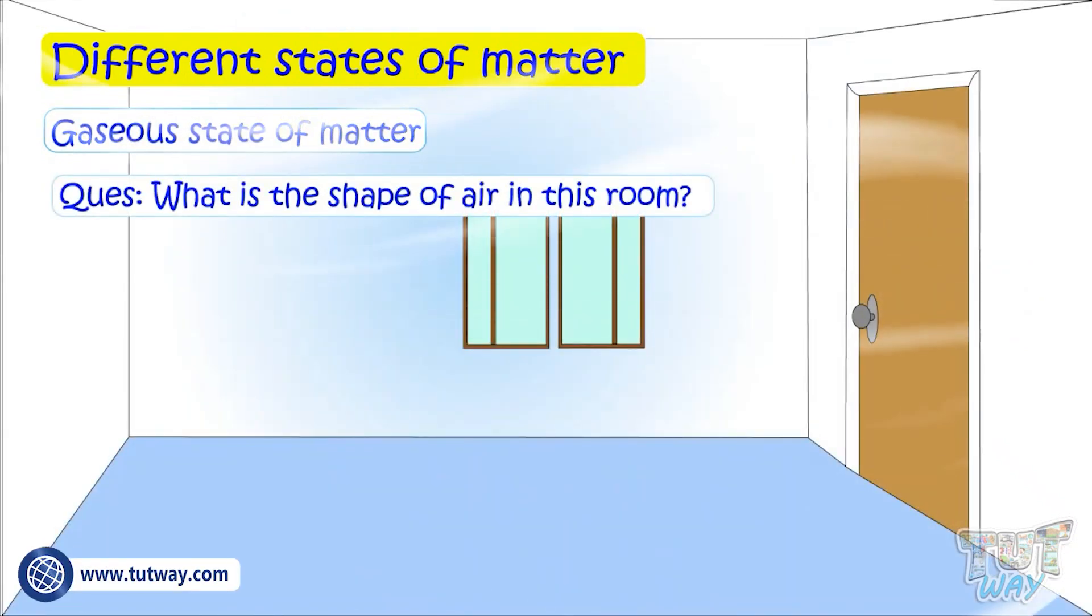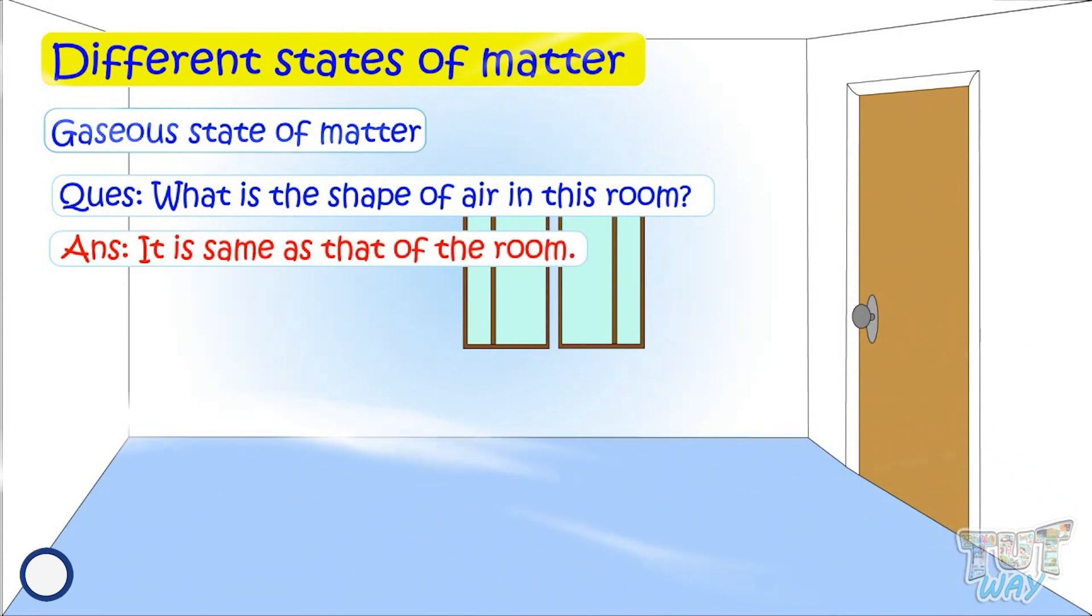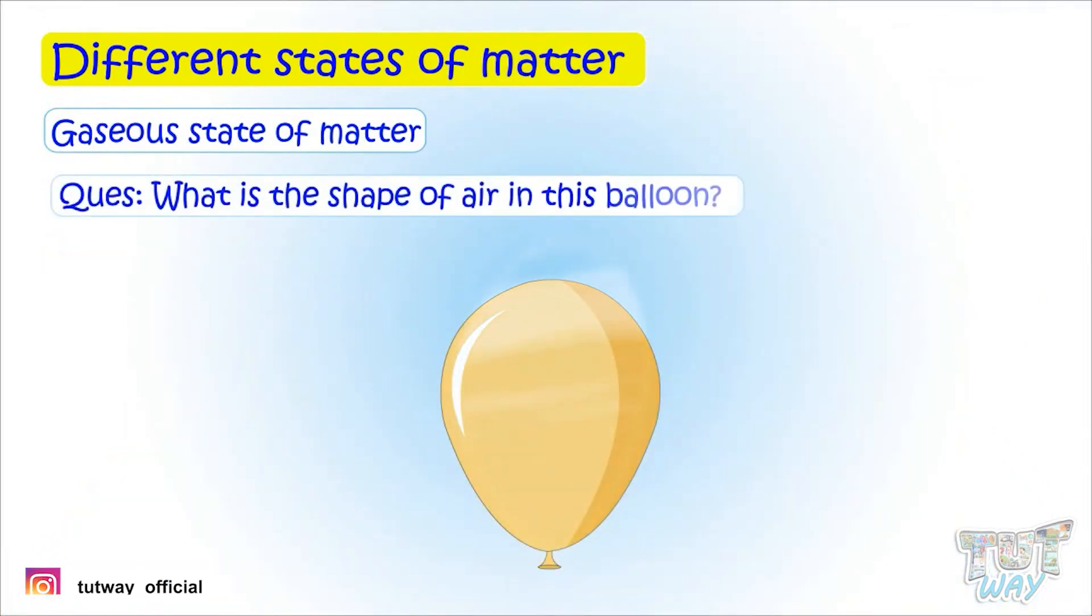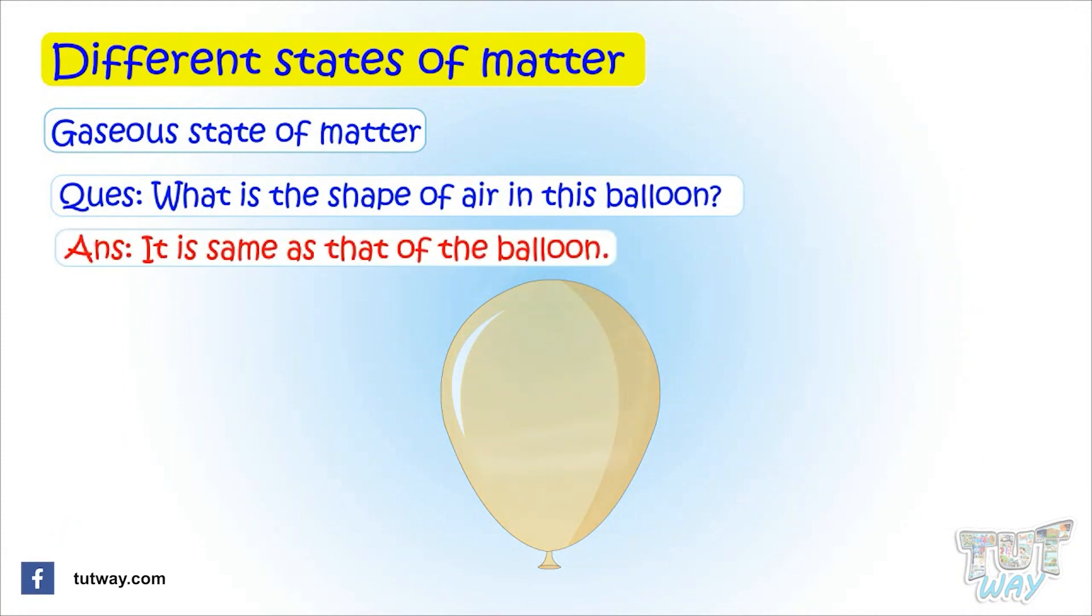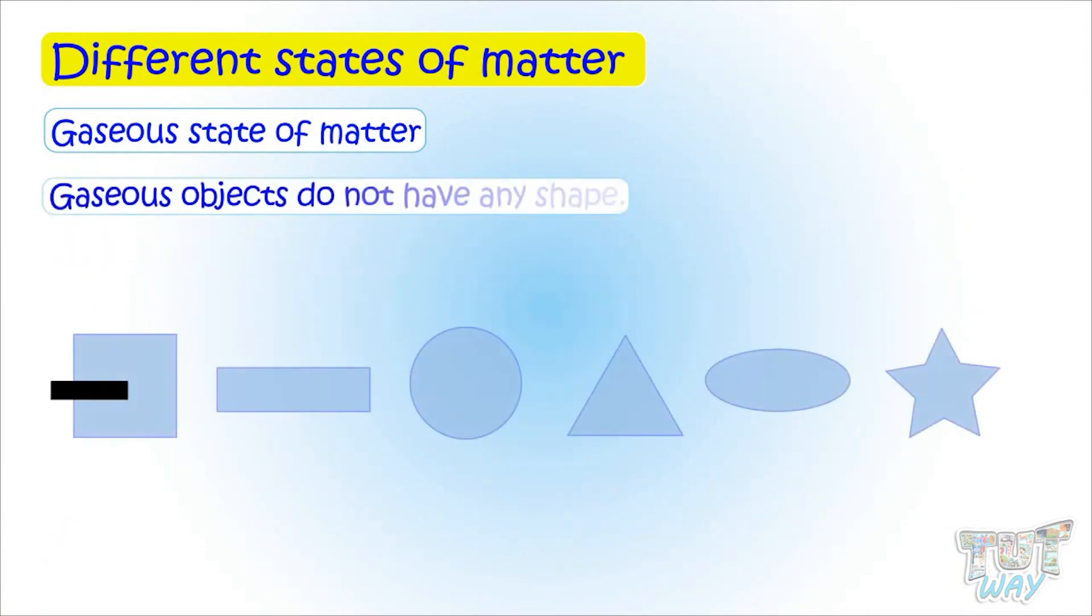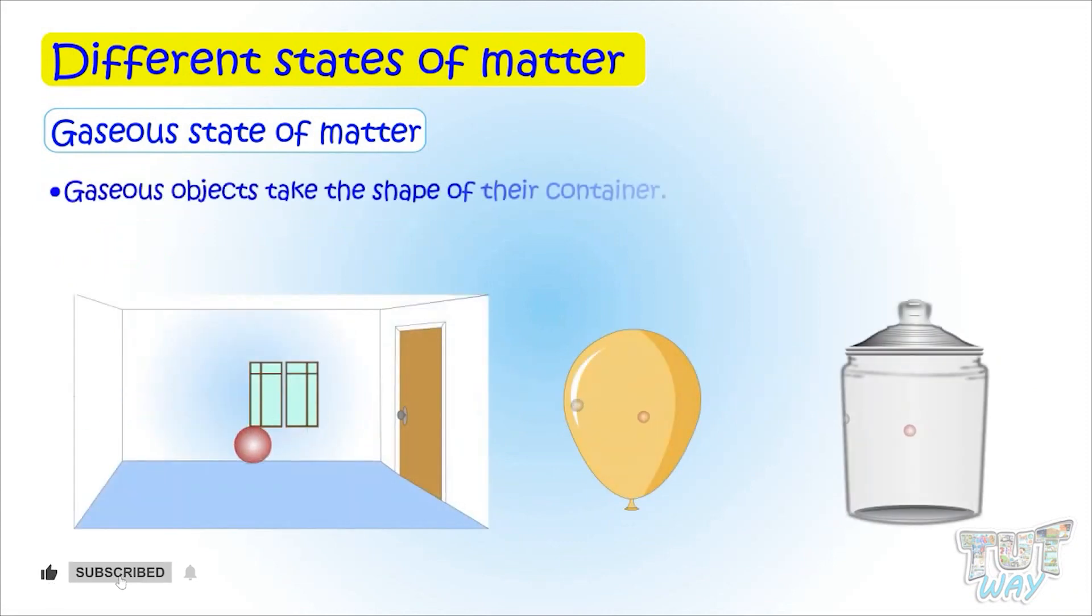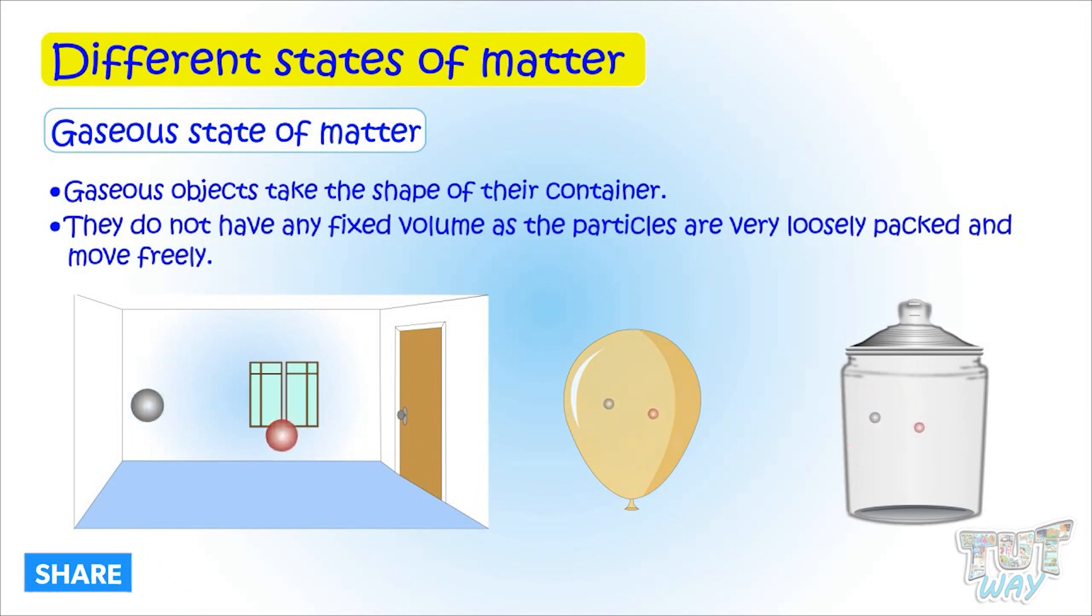What is the shape of air in this room? What is the shape of air in this balloon? It is the same as that of the balloon. Gaseous objects do not have any shape—they take the shape of their container. They do not even have a fixed volume, as the particles are very loosely packed and free to move.